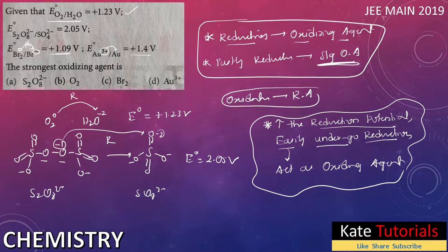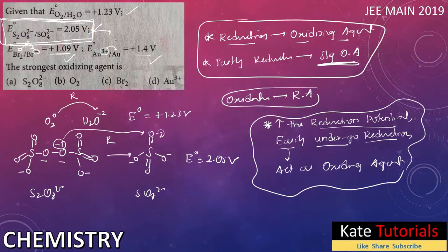All four given reactions are reductions. Among them, S2O8²⁻ has the highest reduction potential of +2.05 volts, so it most easily undergoes reduction, making it the strongest oxidizing agent. This concept is very useful and is repeated every year in NEET as well. Thank you.